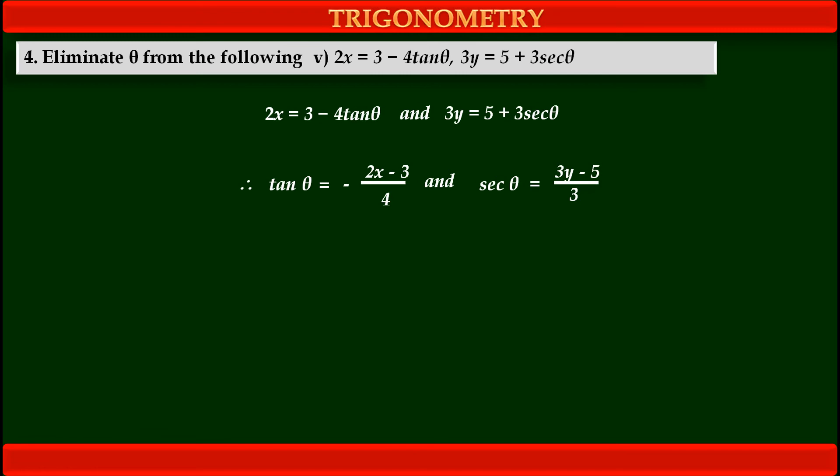Now we have values of tan theta as well as sec theta in terms of x and y. And we have to use identity which is related to tan theta and sec theta. We know this identity: sec square theta minus tan square theta equals 1. Now we have to substitute value of sec theta and tan theta in this identity.